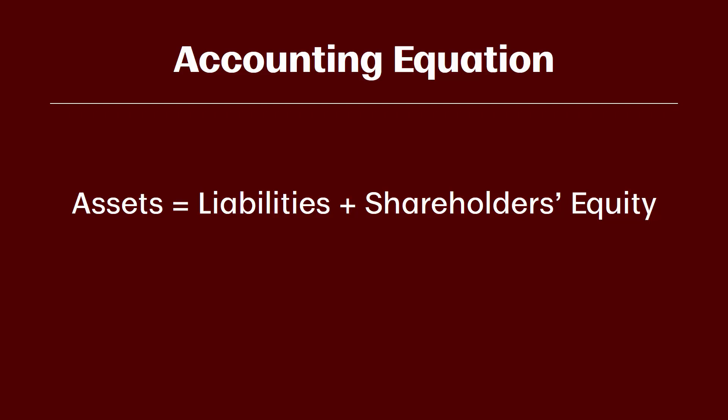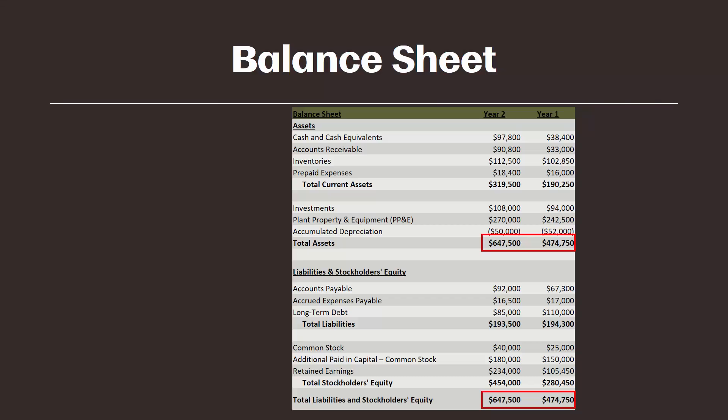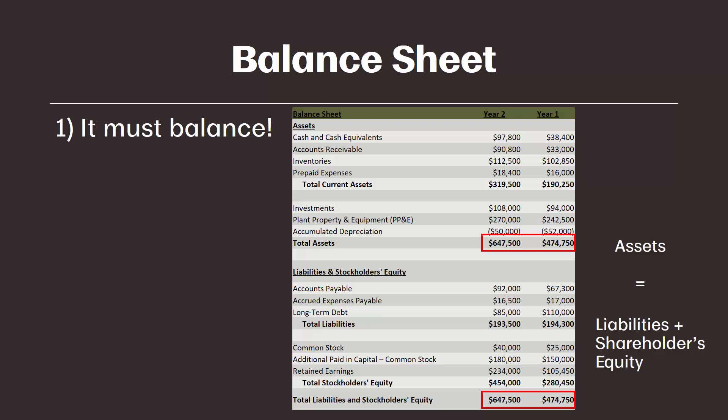Let's look at our sample balance sheet again to make sure that is true. Here, I highlighted the assets and then the liabilities plus stockholders' equity. We can see the assets equal the total of liabilities and stockholders' equity. So rule number one — the balance sheet must balance — is true here.